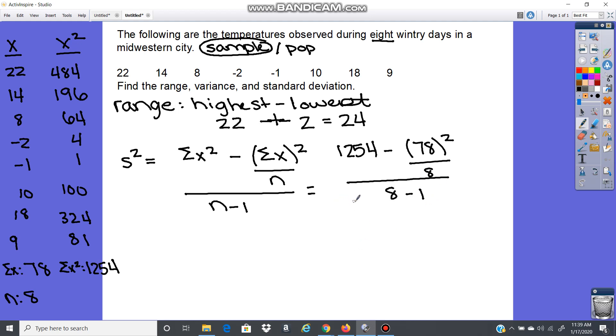Now we use order of operations to solve this. First, 78 squared is 6084. So 1254 minus 6084 over 8, then over 8 minus 1, which is 7. Then 6084 divided by 8 gives 760.5. So 1254 minus 760.5 gives 493.5. Dividing that by 7 gives 70.5. So 70.5 is my variance.